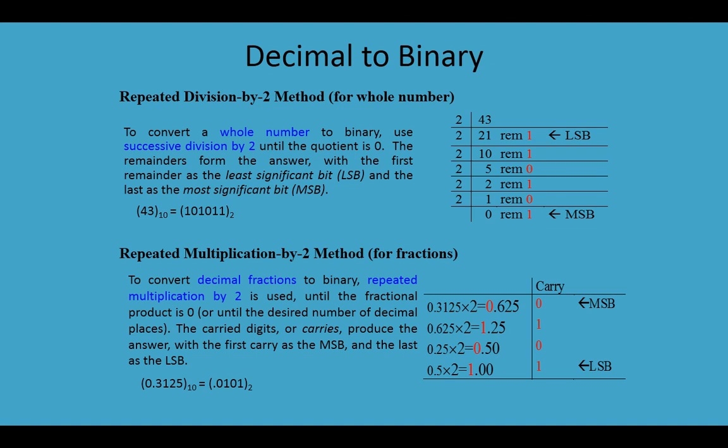Now write from bottom to top and you will get your binary equivalent. In this example, we have divided 43 by 2 and we get quotient 21, written below 43, and remainder 1 on the right side — it is the least significant bit. Now divide 21 by 2: we get quotient 10 and remainder 1, which we write on the right side.